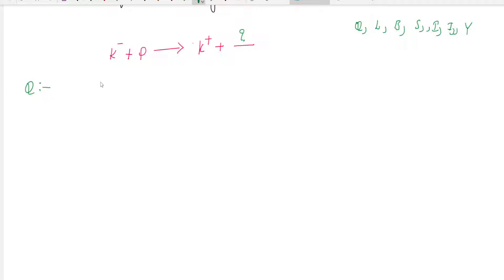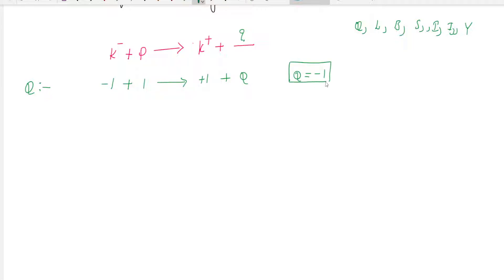Let's check the first example: K⁻ plus proton tends to K⁺ plus K plus unknown. First, checking charge Q: charge of K⁻ is minus one, charge of proton is plus one, tends to K⁺ charge is plus one, plus unknown charge Q. Observing this, minus one plus one equals plus one plus Q, so Q equals minus one.